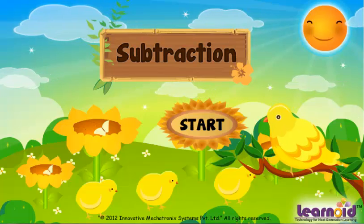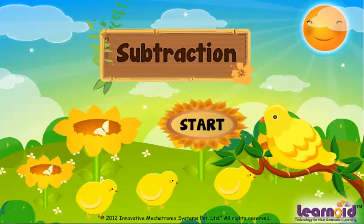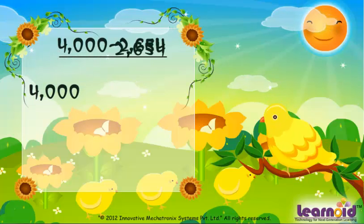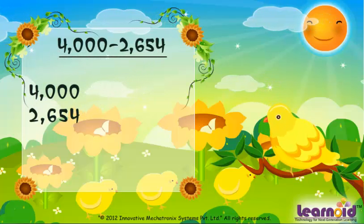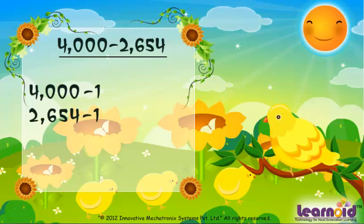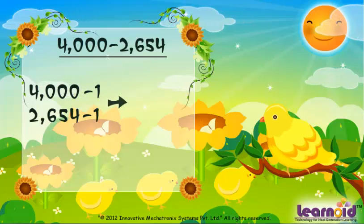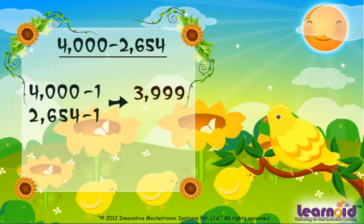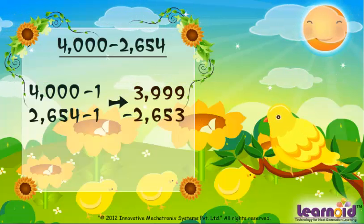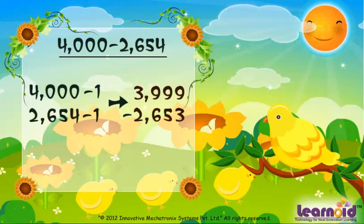Today we will learn another method to subtract from zeros. We have to subtract 2654 from 4000. First subtract 1 from both the numbers. 4000 will become 3999 and 2654 will become 2653.